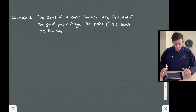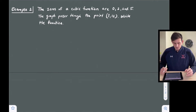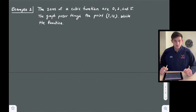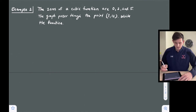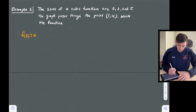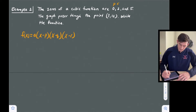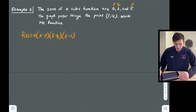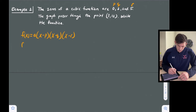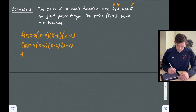Now let's look at how to write a cubic function. The zeros of a cubic function are zero, two, and five, and the graph passes through the point (3, 12). We start with intercept form: f(x) equals a times x minus p times x minus q times x minus r. Plugging in the zeros: f(x) equals a times x minus zero times x minus two times x minus five. Since x minus zero is just x, we simplify to a times x times x minus two times x minus five.